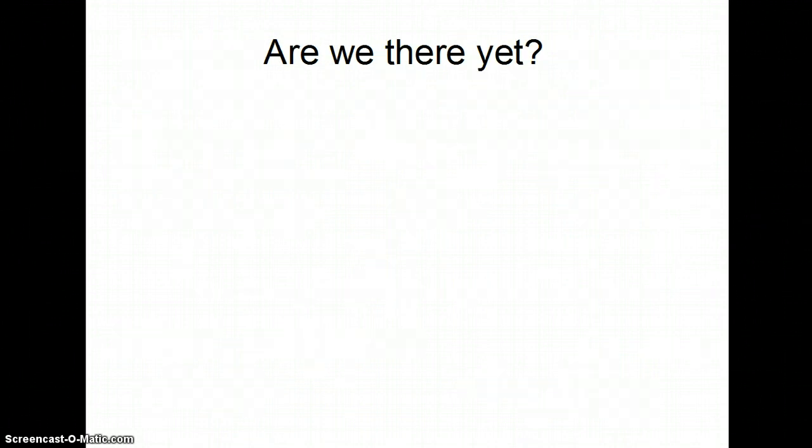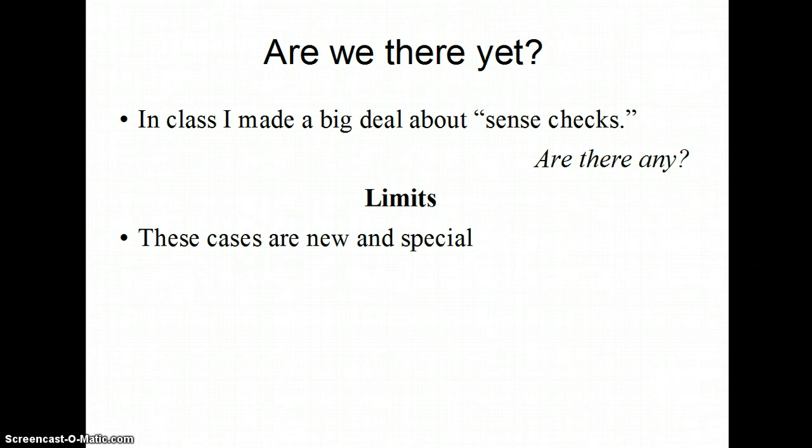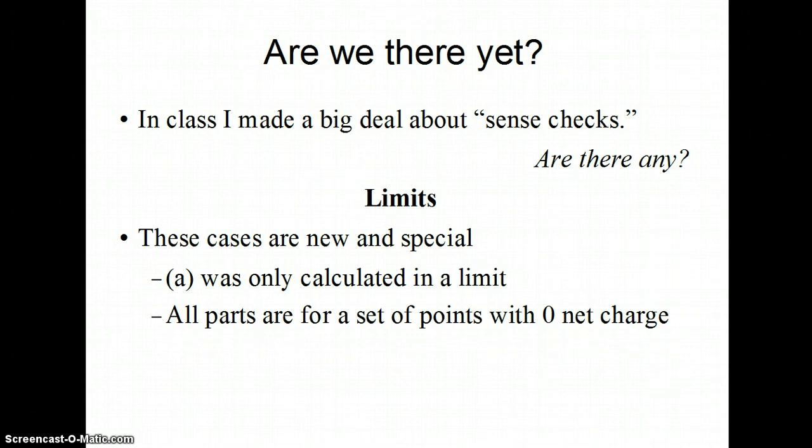Are we finished? I gave you answers for each part. In class, I always made a big deal about sense checks. You've got to wonder if you can check the sense of any of this. The big thing I always talk about for these problems is limits. These cases though are all special, all a little different from things we've done before. Part A was only calculated in a limit. All the parts are for a set of points with zero net charge. We've got to think about what we can expect.